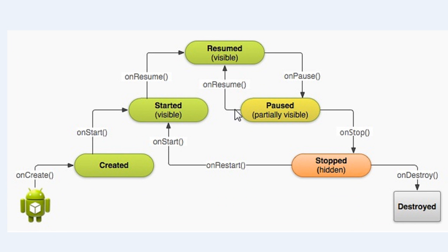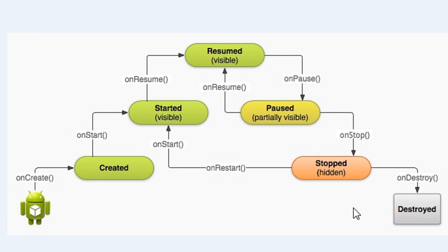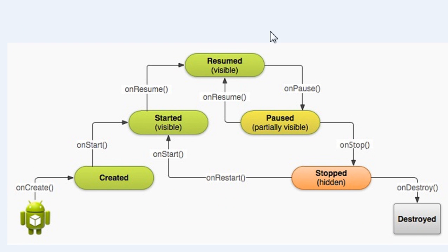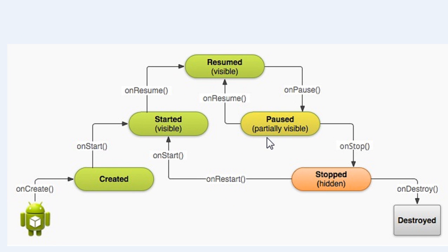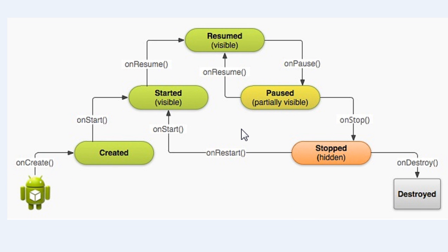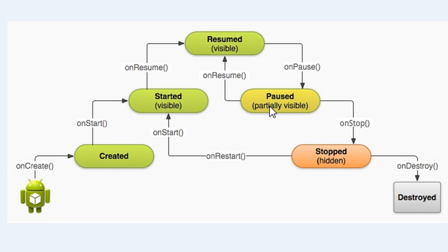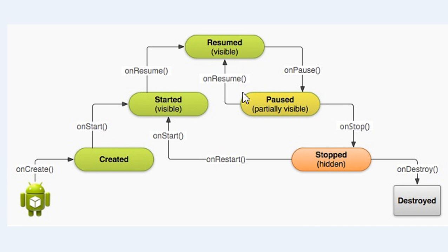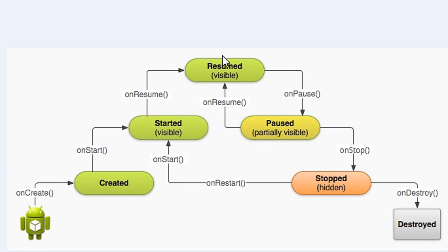If an activity is paused, or if an interrupt or other application interrupts the activity, then the system will automatically call the onPause method. During onPause the activity is partially visible. For example, if an incoming call comes in while an activity is running, the activity is paused and partially visible. After closing the interrupting activity, the system will invoke onResume for the paused activity and it resumes again.